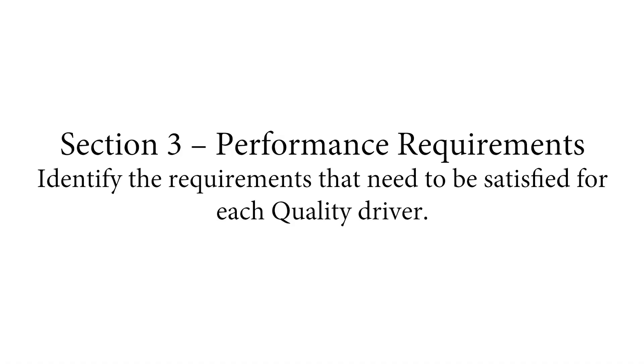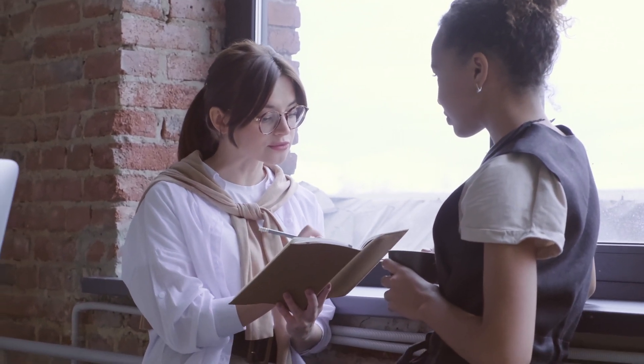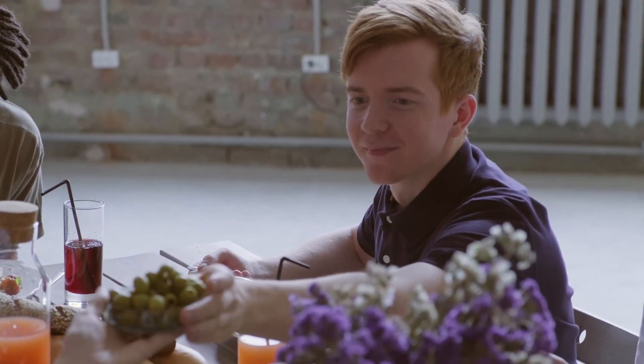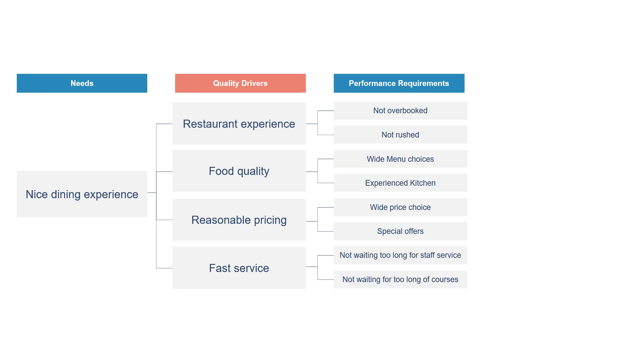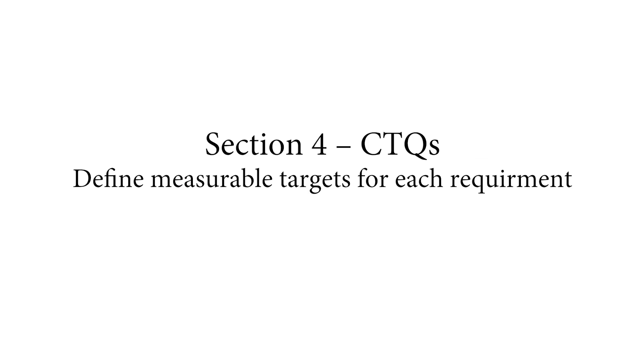The third section is performance requirements. Here, we identify the requirements that need to be satisfied for each of the quality drivers. Continuing with the restaurant example, we can now try to get even more clarification from our customers. Our goal is to identify performance requirements related to each of the quality drivers. Here, we might identify that the quality driver restaurant experience is determined by two performance requirements: the restaurant should not be overbooked, and the staff should not rush us while we are eating our meal. For example, the quality driver reasonable pricing could have the following performance requirements: wide price choices and special offers.